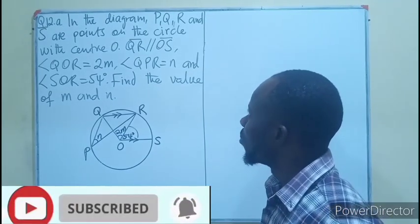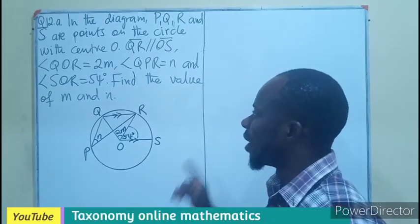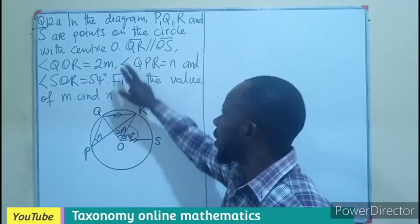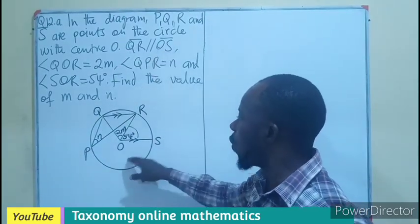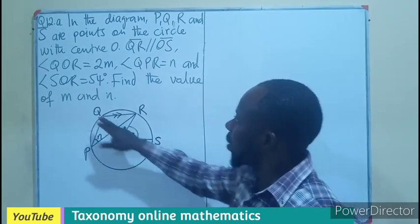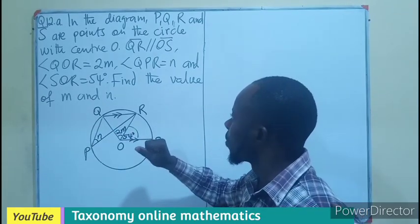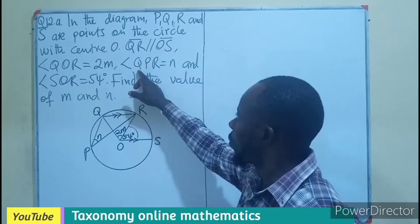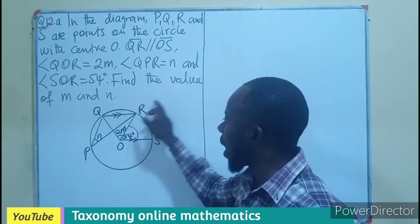In the diagram, P, Q, R, and S are points on the circle with center O. The line QR is parallel to the line OS. The angle QOR is given as 2m, and the angle QPR is given as n.